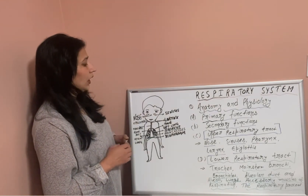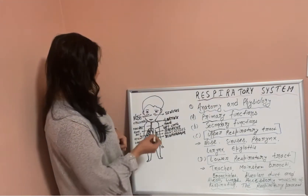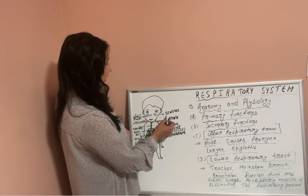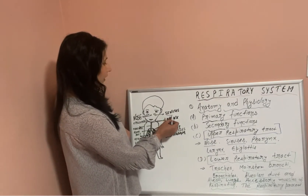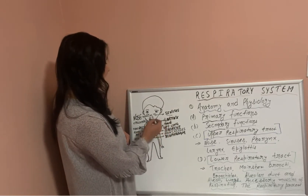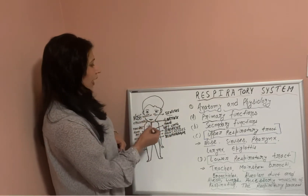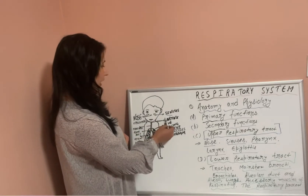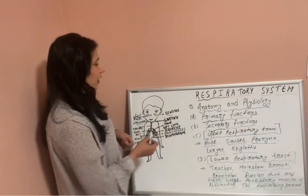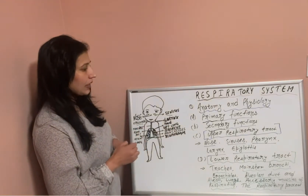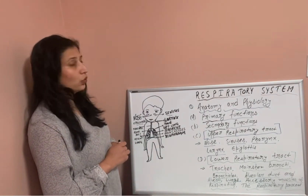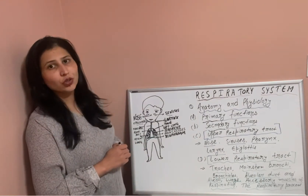In the upper respiratory system, there is the nose, sinuses, pharynx — which is behind the nose — larynx, and epiglottis. These are the parts of the upper respiratory system.